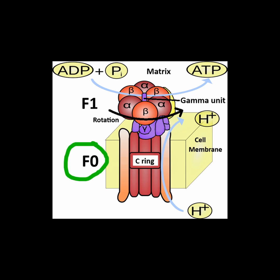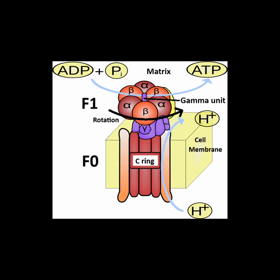The base is called F0. The head of the device, at the other end of the stalk, is called F1, and it is positioned within the mitochondrial matrix. There is an opening in F0 that allows the passage of the protons through it into the mitochondrial matrix.